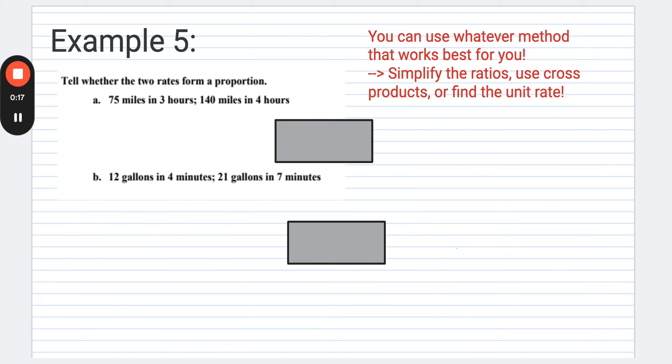So for this first example, as I noted at the top of the screen there, it says you can use whatever method works best for you. Simplify the ratios, use cross products, or find the unit rate. Any of those are going to work.